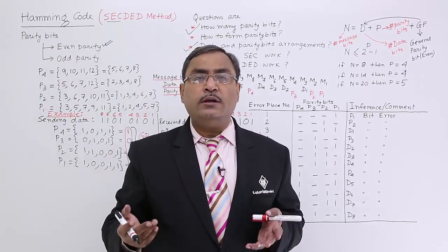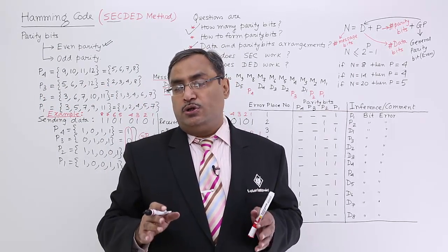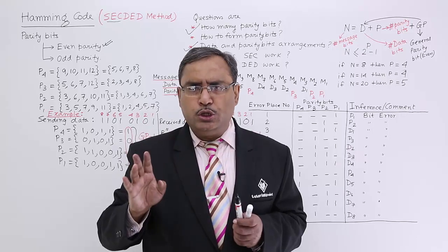The syndrome indicates it is not equal to 0, but the general parity indicates there is no error. What is the conclusion? SECD. That means double bit error has occurred. Now see what is happening, I am just making one conclusion.